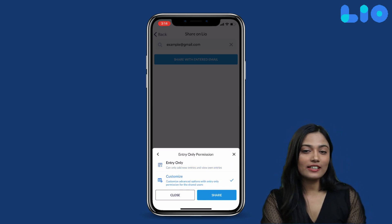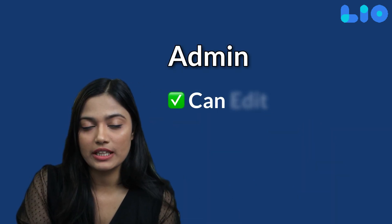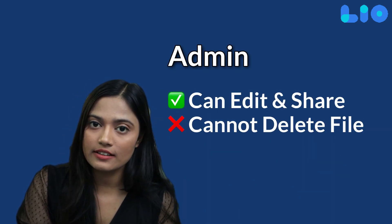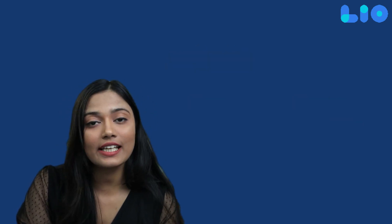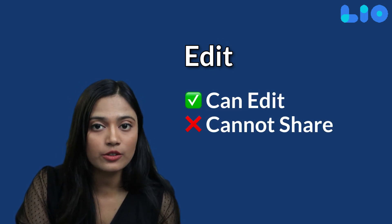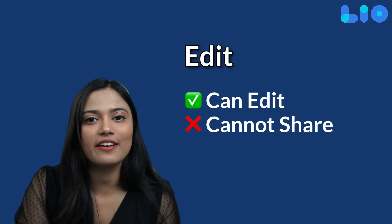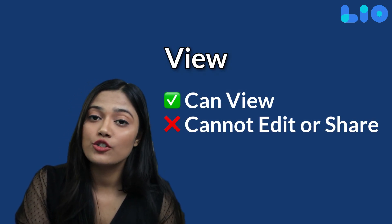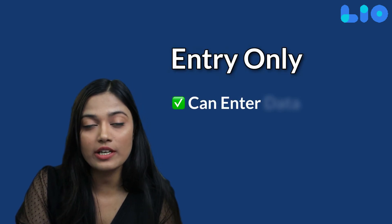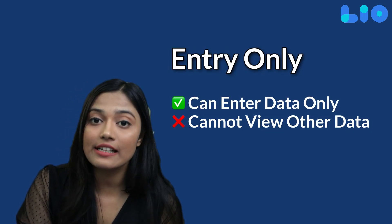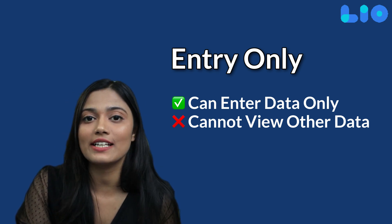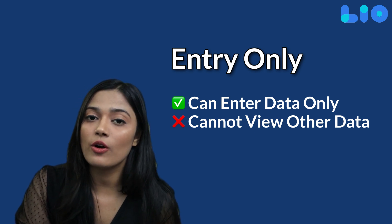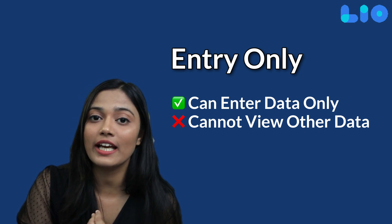Admin permission means the user can edit this file, change it, and share it. Can Edit means the user can edit the file but not share it. Can View means the user can only see this file. Entry Only means the user can only enter data and can only see the data which they have added — other data in the file will not be visible to them.